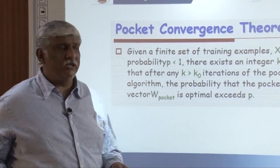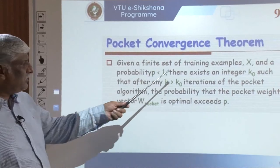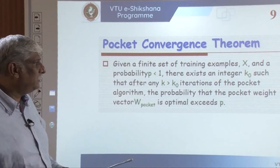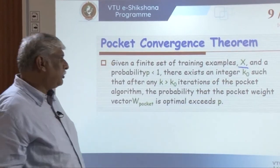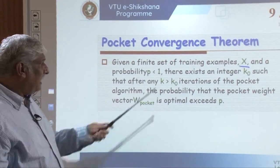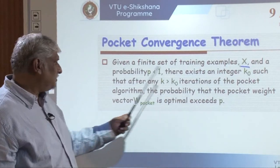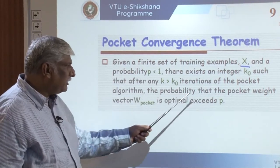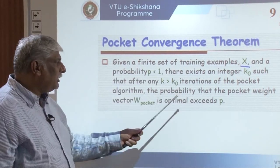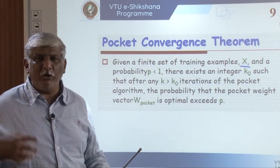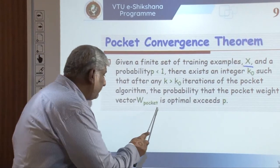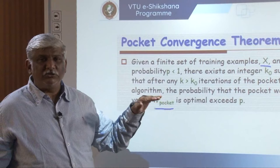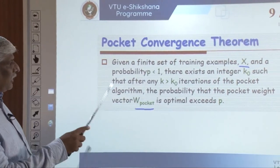The pocket convergence theorem states: given a finite set of training examples X and a probability p less than 1, there exists an integer k0 such that after every k greater than k0 iterations of the pocket algorithm, the probability that the pocket weight vector W_pocket is optimal exceeds p. This guarantees that after sufficient iterations, the pocket weight vector converges to a near-optimal solution.